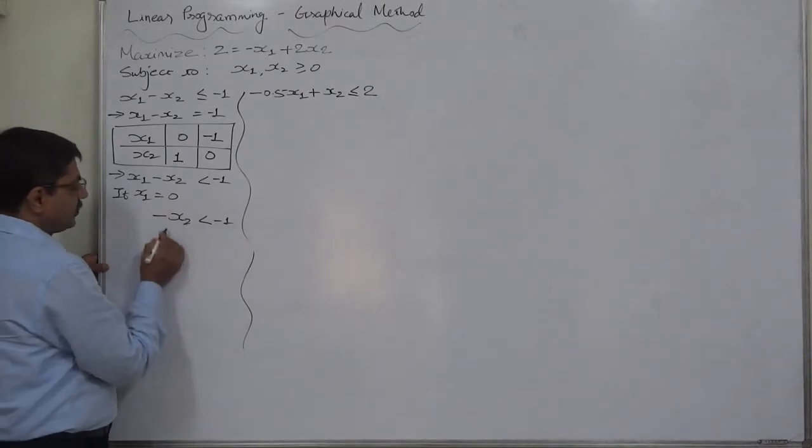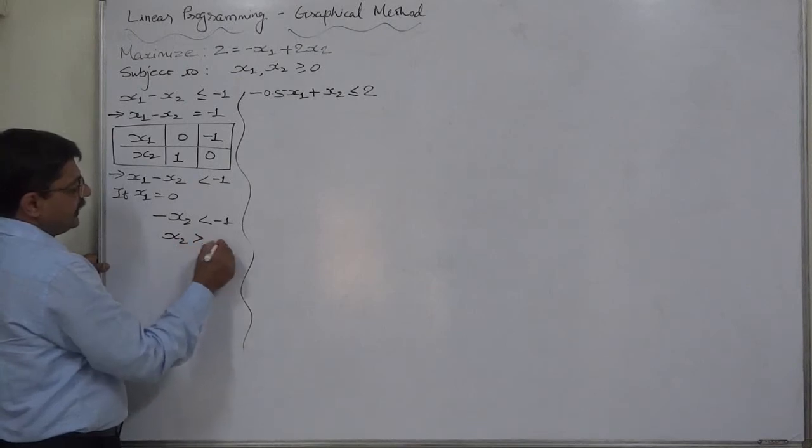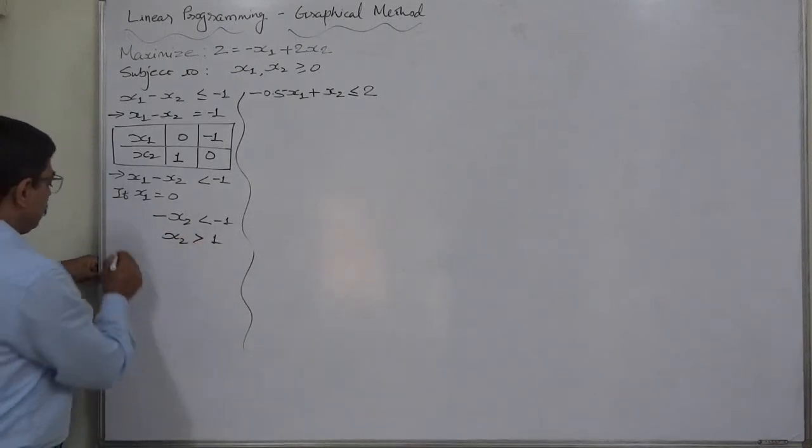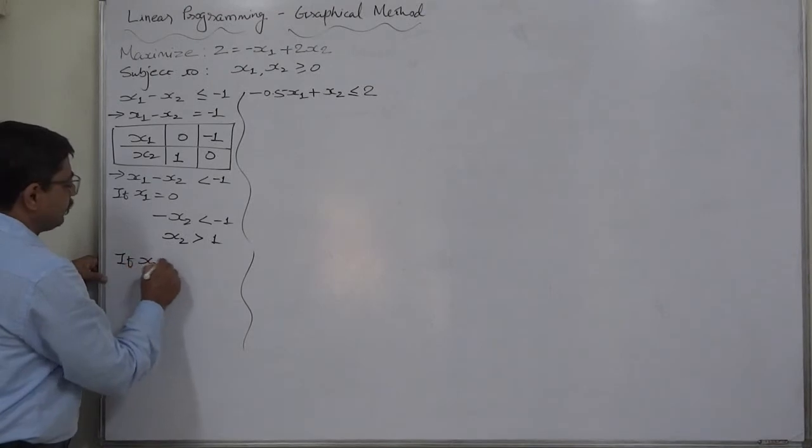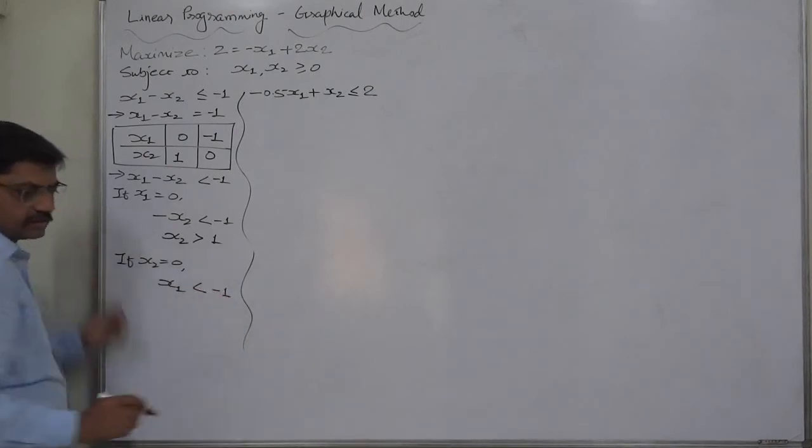Just change all the signs. Minus x2 will be now x2, less than will be greater than, and minus 1 will be 1. Now, what if x2 takes value 0? Then it will be x1 less than minus 1.